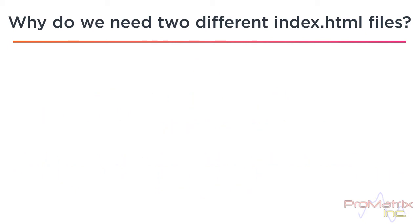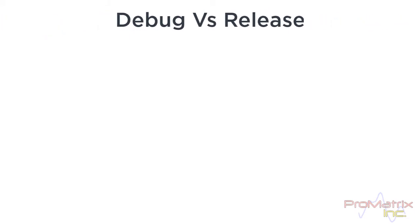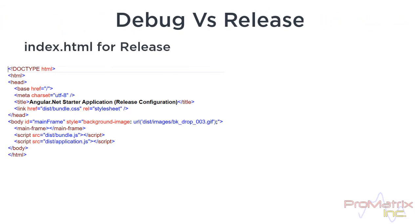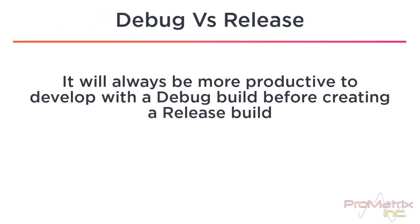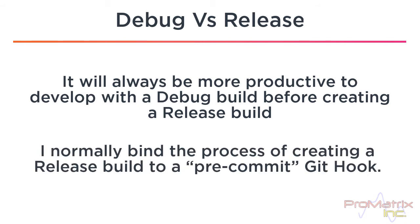One last thing to consider: the index.html file for the release mode is different than the index.html file for the debug mode. As you have seen from developing C#, the debug build is much easier to debug than the release build. TypeScript is no different — it will always be more productive to develop with the debug build before creating a release build. In fact, I normally bind the process of creating a release build to a pre-commit git hook.